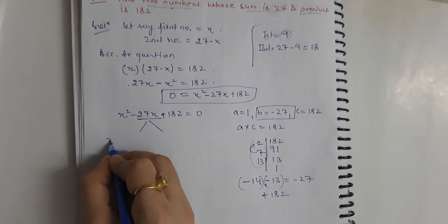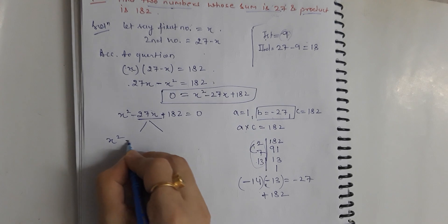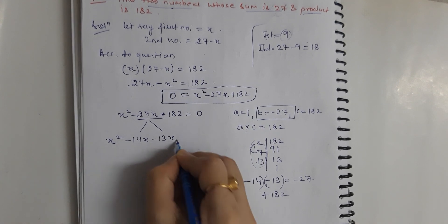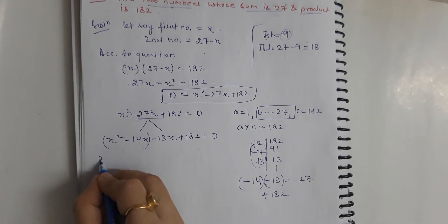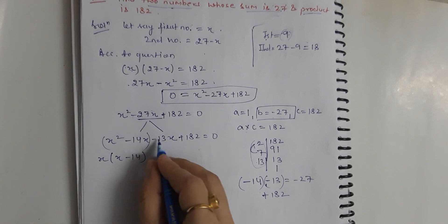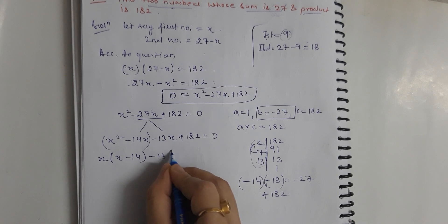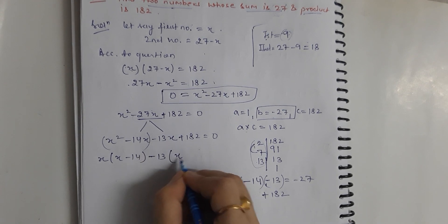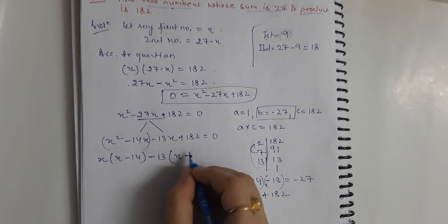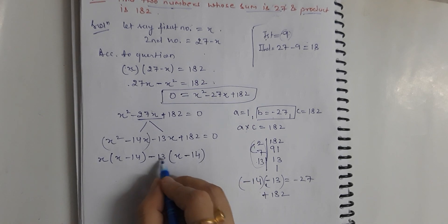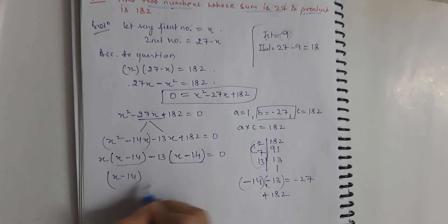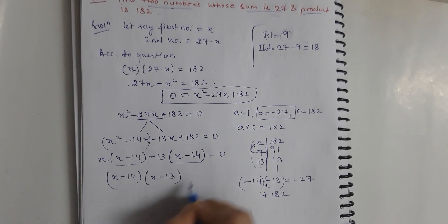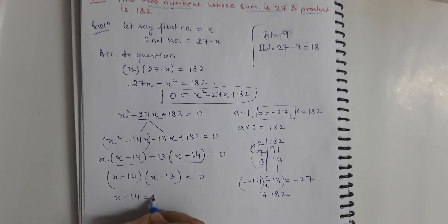Breaking the middle term, we write x squared minus 14x minus 13x plus 182 equals 0. Taking common factors from each pair: x is common from the first two terms giving x(x minus 14), and minus 13 is common from the last two terms giving minus 13(x minus 14).